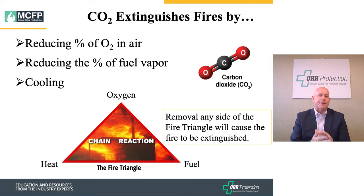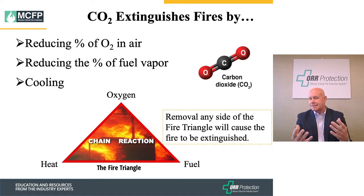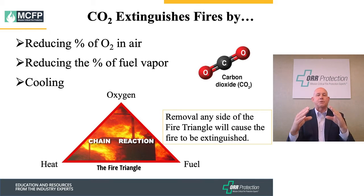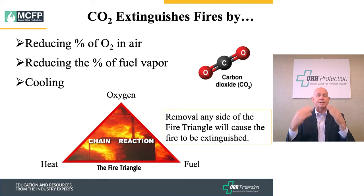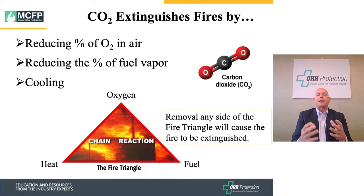As you've seen on the graph, the fire triangle that we learned many years ago is still in existence today. You've got to have oxygen, heat, and a fuel source, plus a chain reaction for those elements to actually work. If you remove one element of the fire triangle, that will suppress the fire or cause it to go out.